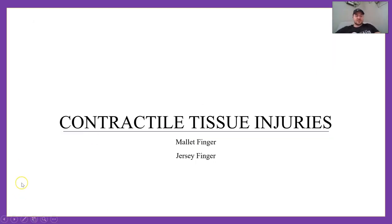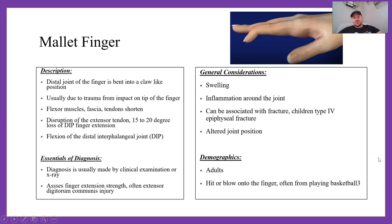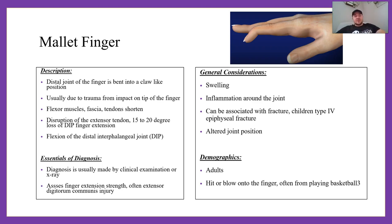Alright, contractile tissue injuries — mallet finger and jersey finger. We have three more diagnoses to roll through. Mallet finger is when the distal joint of the finger is bent into a claw-like position, usually due to trauma from impact on the tip of the finger. Think of jamming your finger trying to catch a basketball that hits the tip. What happens is the extensor mechanism at the DIP — the extensor tendon to the distal phalanx — is ruptured, giving you the mallet finger deformity.